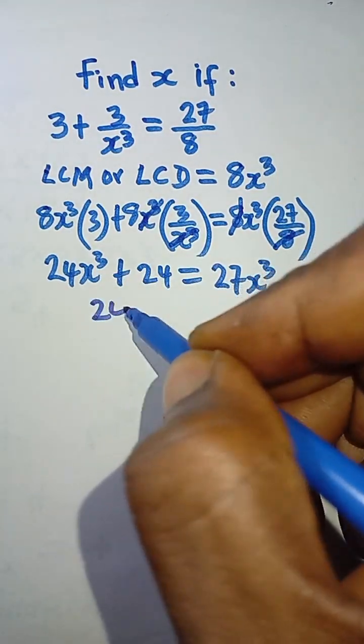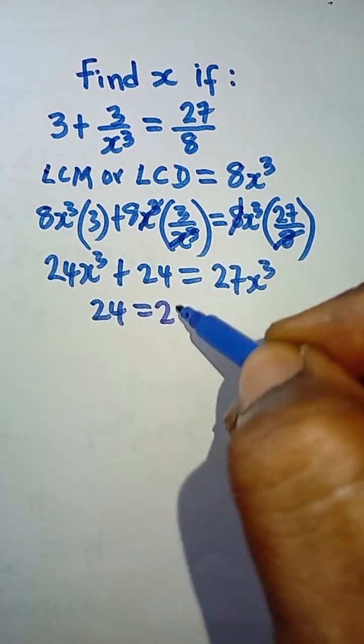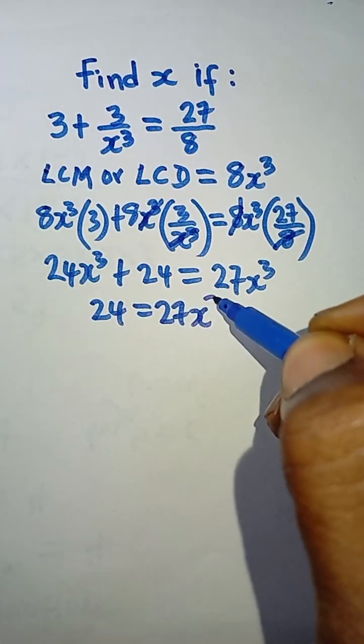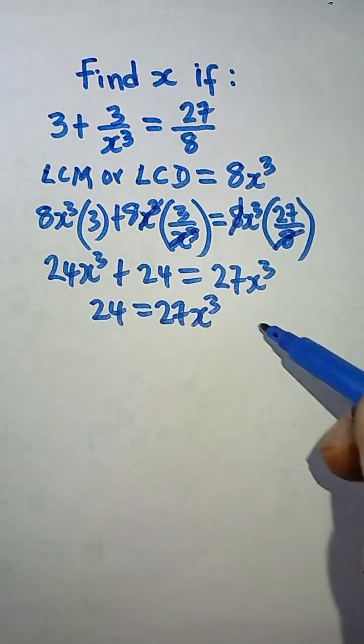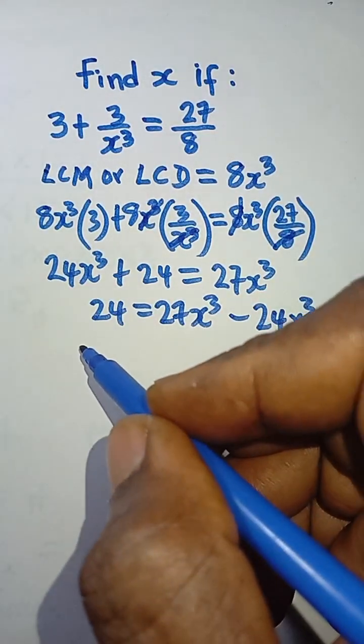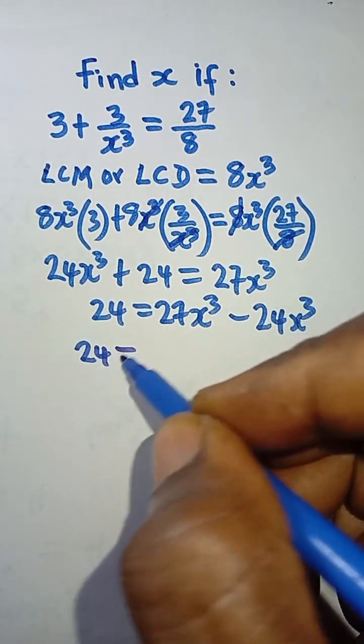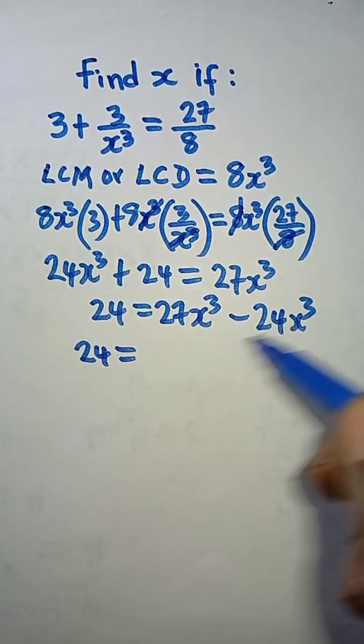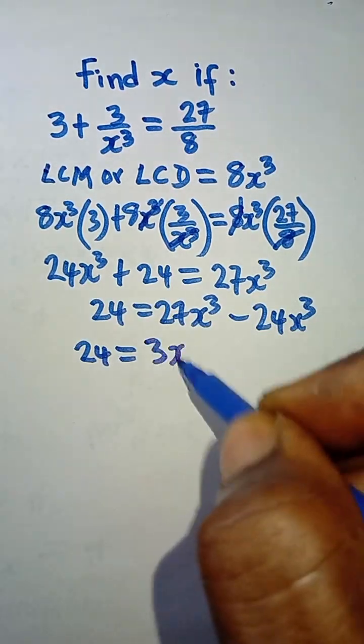So we can leave the 24 here and we have 27x cubed. This one comes to this side and becomes minus 24x cubed. And then we have 24 is equal to 27x cubed minus 24x cubed, which gives us 3x cubed.